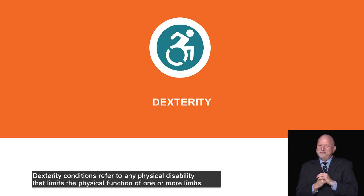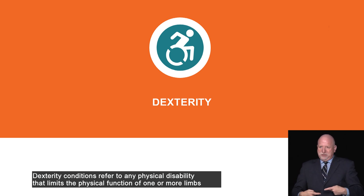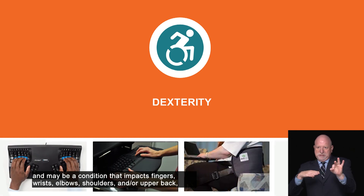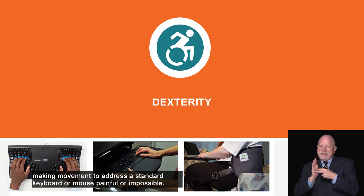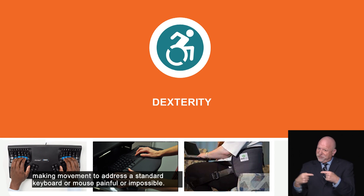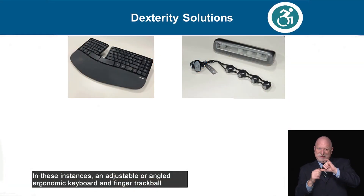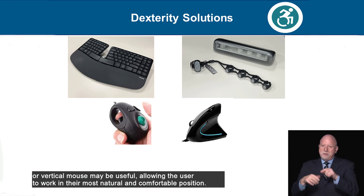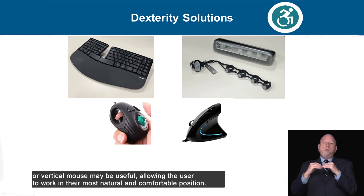Dexterity conditions refer to any physical disability that limits the physical function of one or more limbs, and may be a condition that impacts fingers, wrists, elbows, shoulders, and or upper back, making movement to address a standard keyboard or mouse painful or impossible. In these instances, an adjustable or angled ergonomic keyboard and finger trackball or vertical mouse may be useful, allowing the user to work with their most natural and comfortable position.